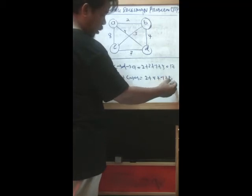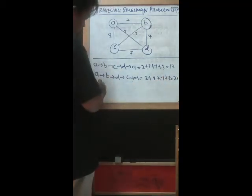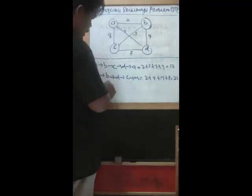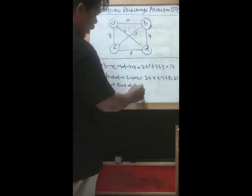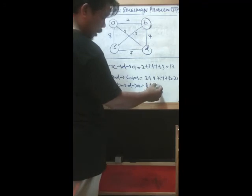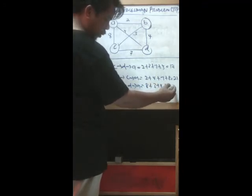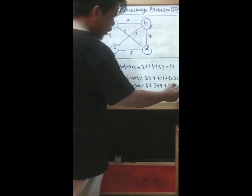Maybe another solution is A through C through B through D and back to A. The cost is 8 plus 3 plus 4 plus 5, around 20.